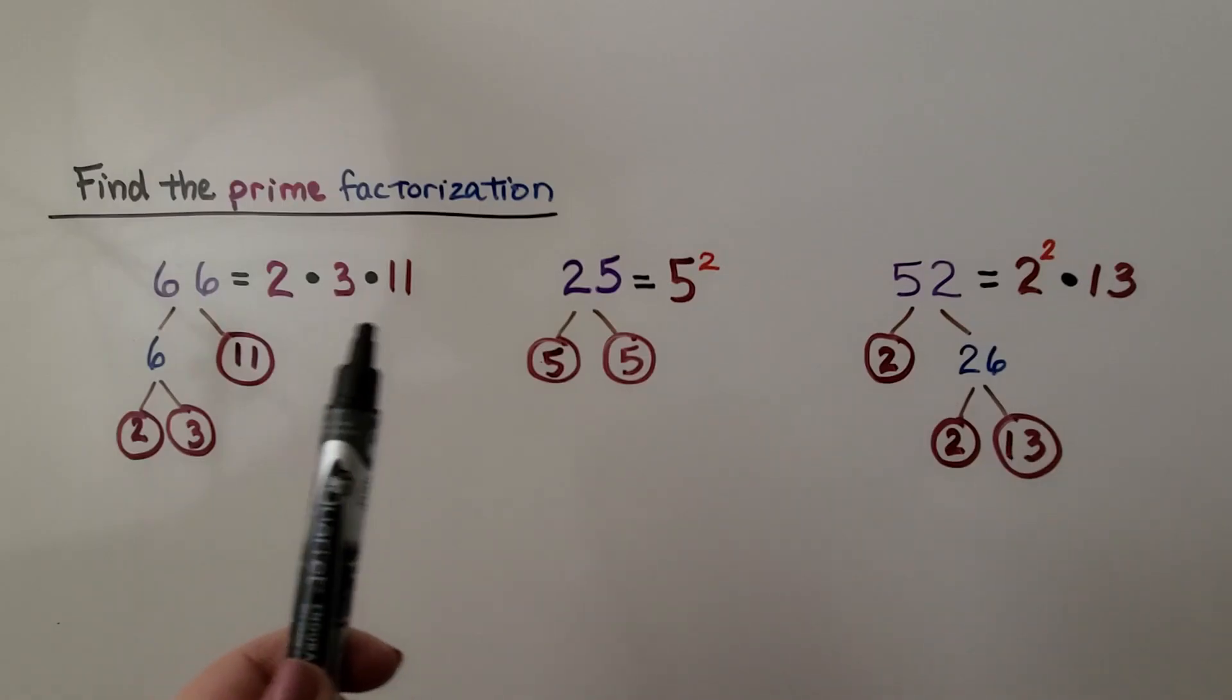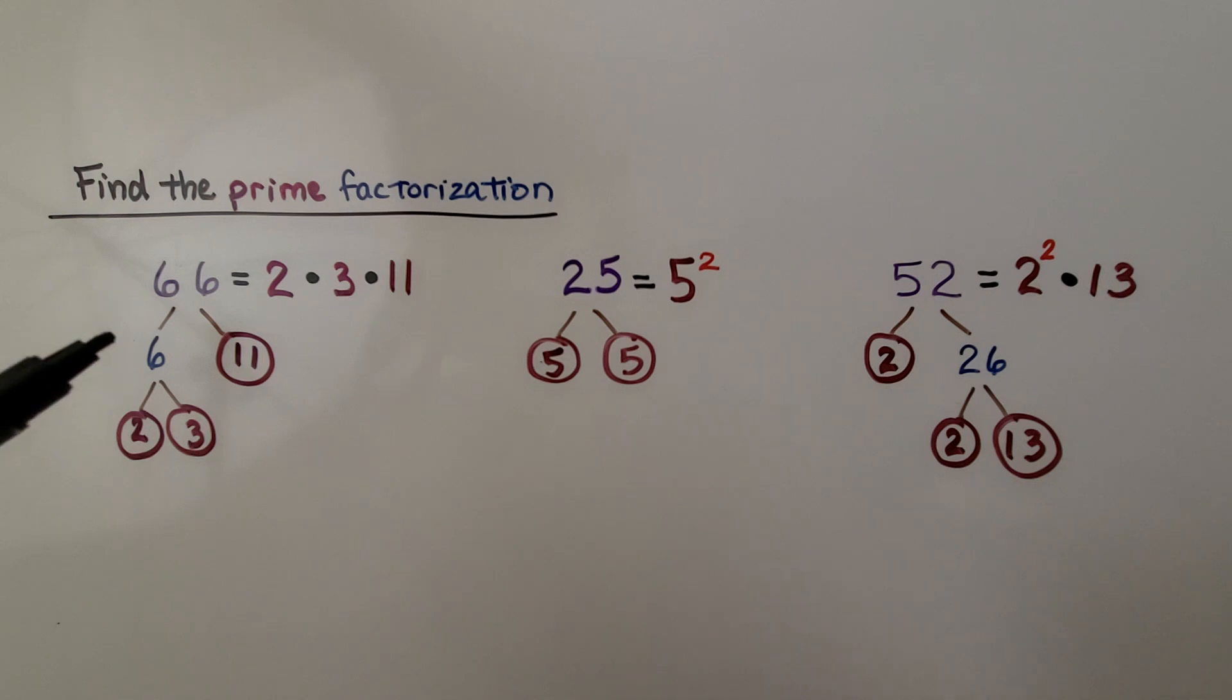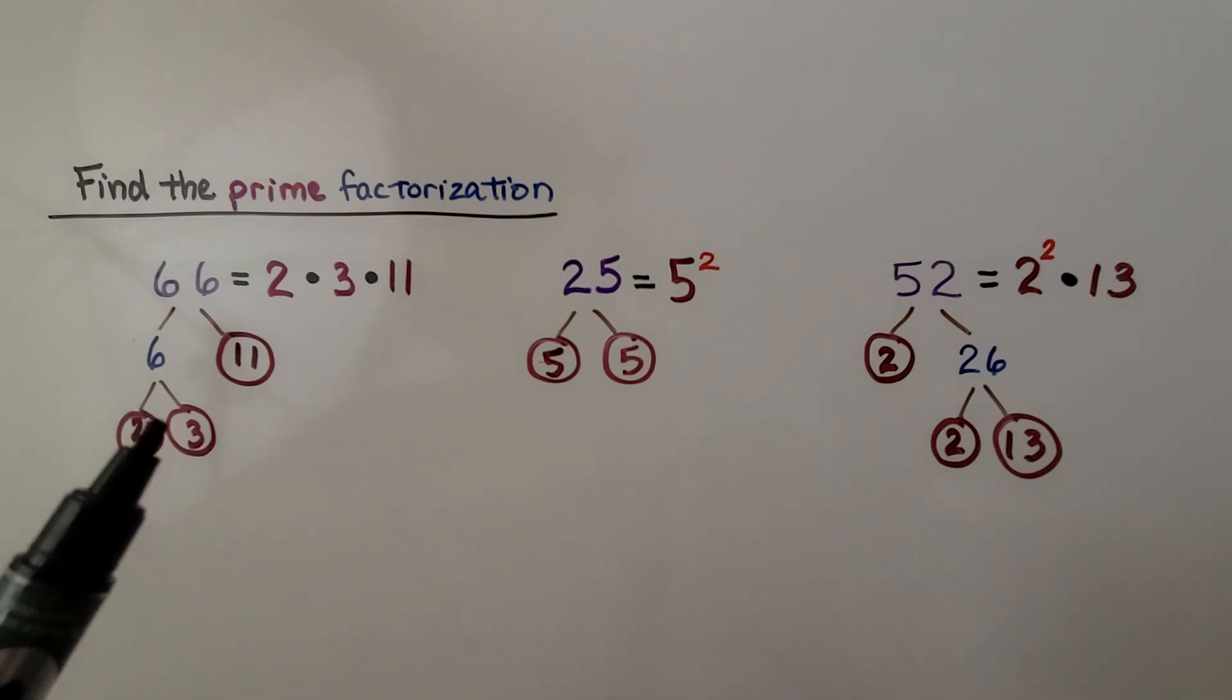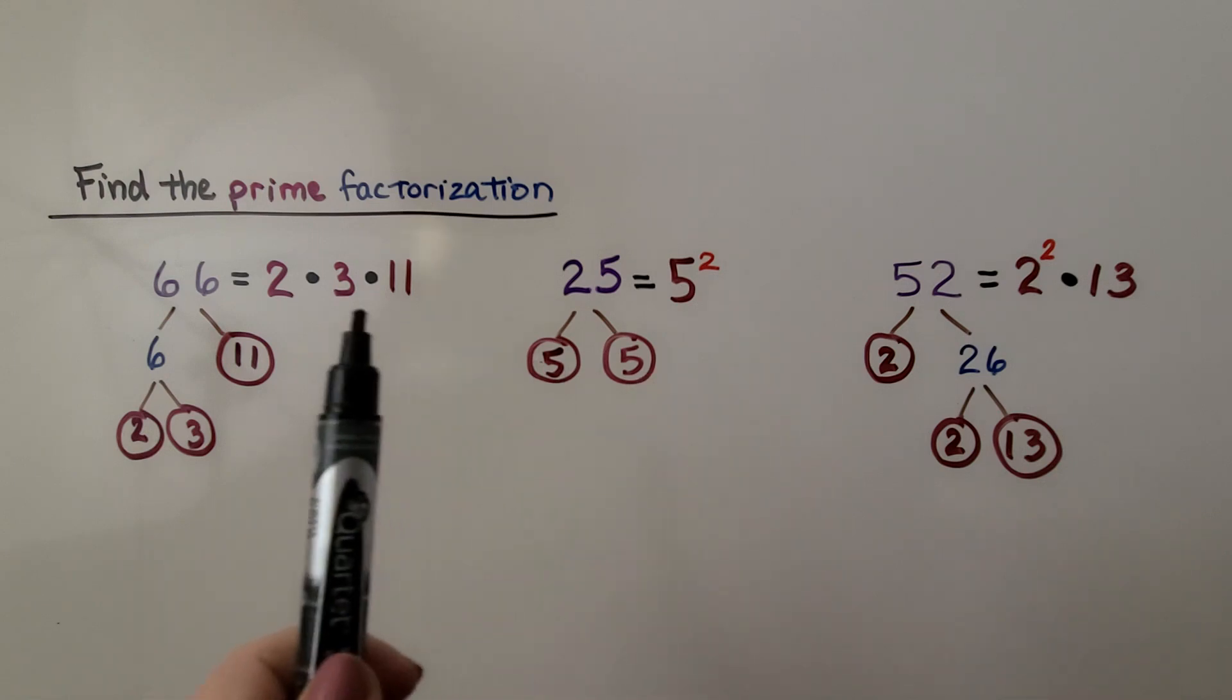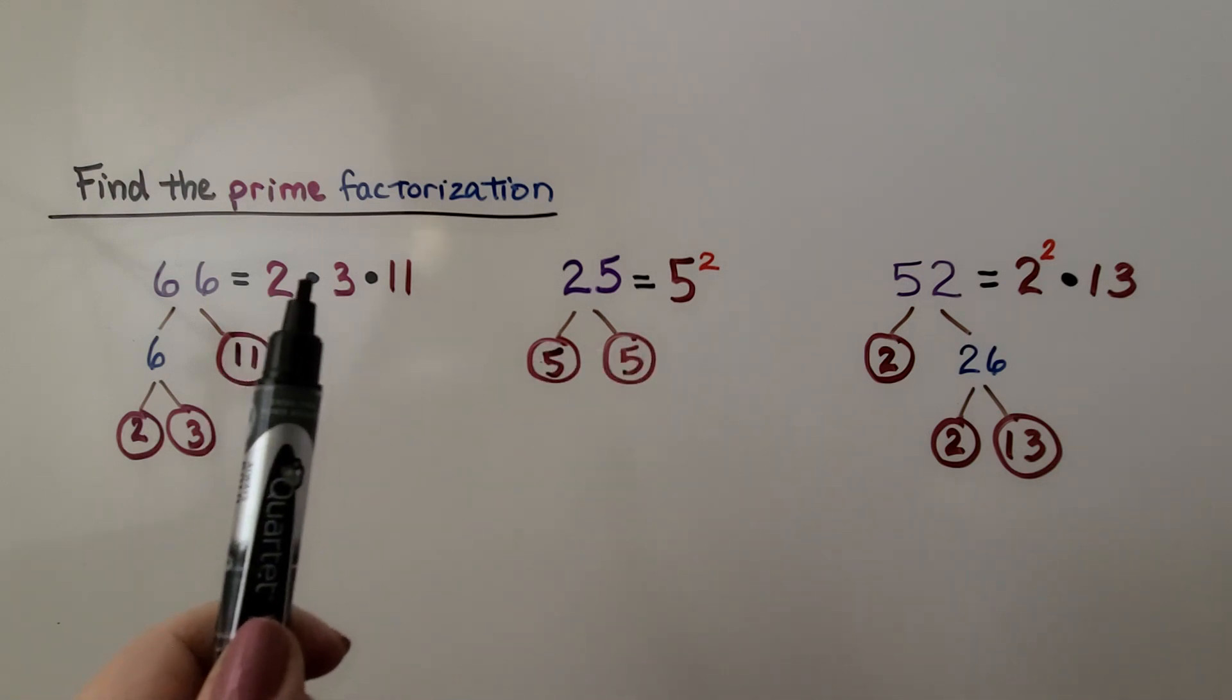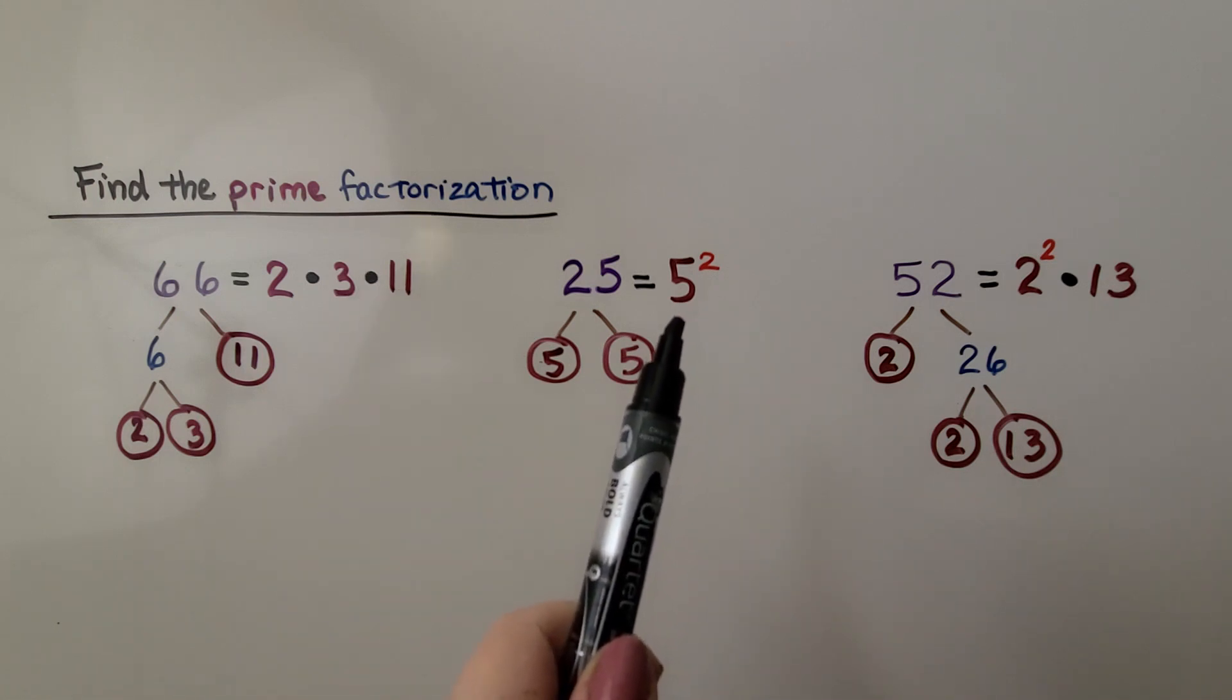Sometimes our prime factorization will not include exponents, and sometimes it will. For 66, we think, well, that's easy. That's 6 times 11. But we can break 6 into a 2 times 3. So our prime factorization for 66 is 2 times 3 times 11. This one's easy. We know 5 times 5 is 25. It's not multiplied to anything. Like here, we have a 2 times a 3 times an 11. It's just 5 raised to the second power.